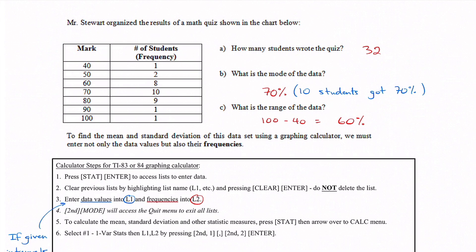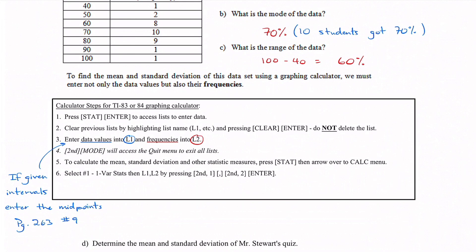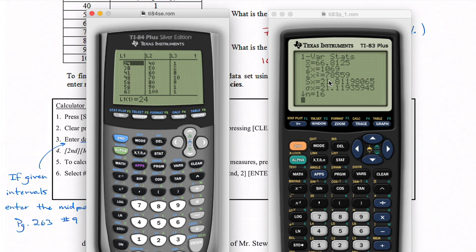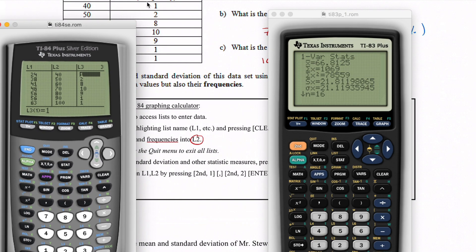To find the mean and standard deviation using a graphing calculator with frequency data, we must enter not only the data values but also their frequencies. You'd click Stat, go to Edit, and move over to List 2 to put in the percentages: 40, 50, 60, 70, all the way up to 100. Then in List 3, put in the frequencies — 1, 2, 8, 10, and so on — making sure they're across from the right value. The steps are the same on both calculators.